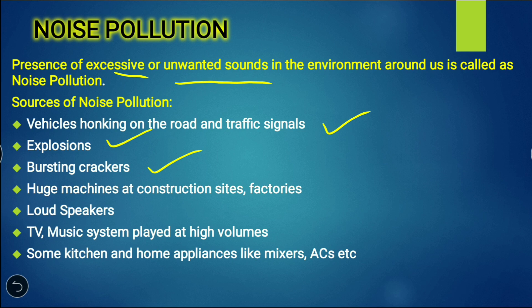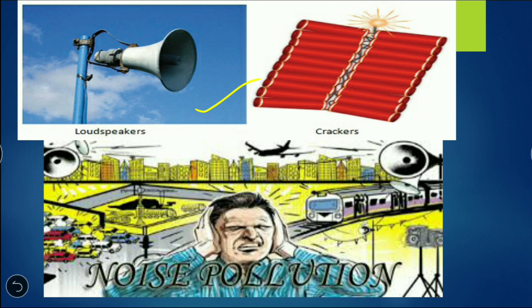Other sources of noise pollution include machines used at construction sites or factories, loudspeakers, TV and music systems played at high volumes, and some kitchen and home appliances like mixers and ACs. Examples of noise pollution include loudspeakers, crackers, traffic, trains, aeroplanes, and loudspeakers. These sounds created at different places generate noise pollution.